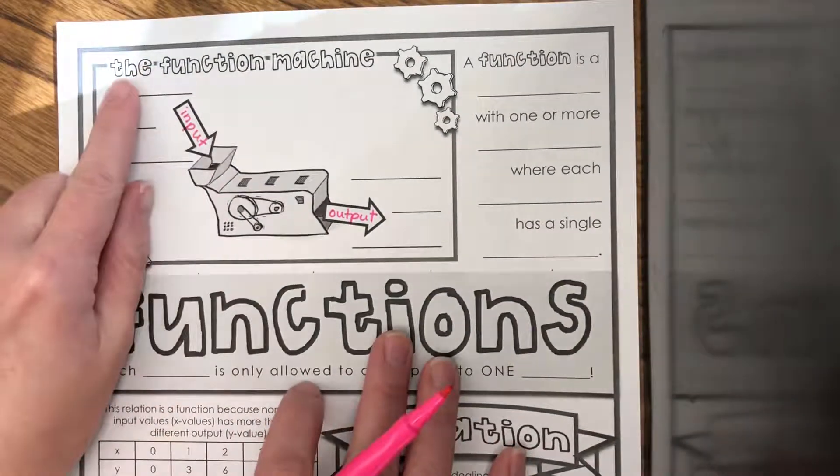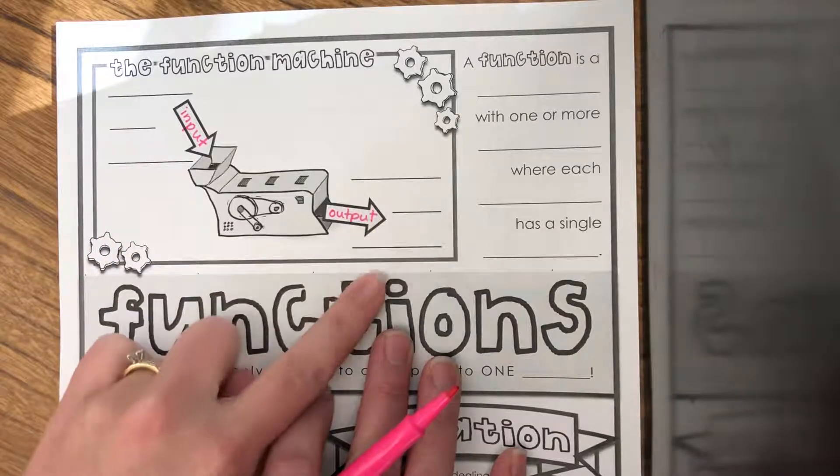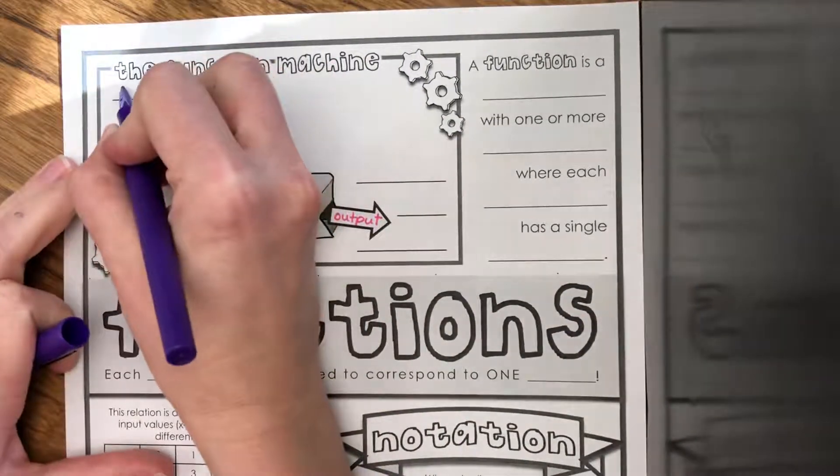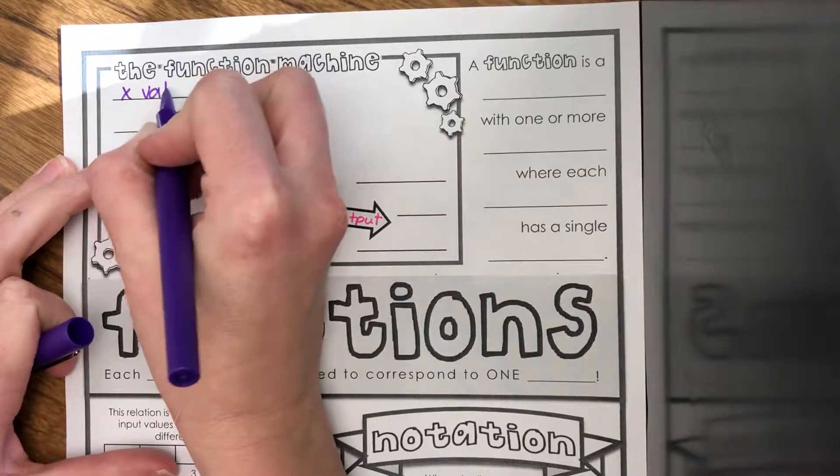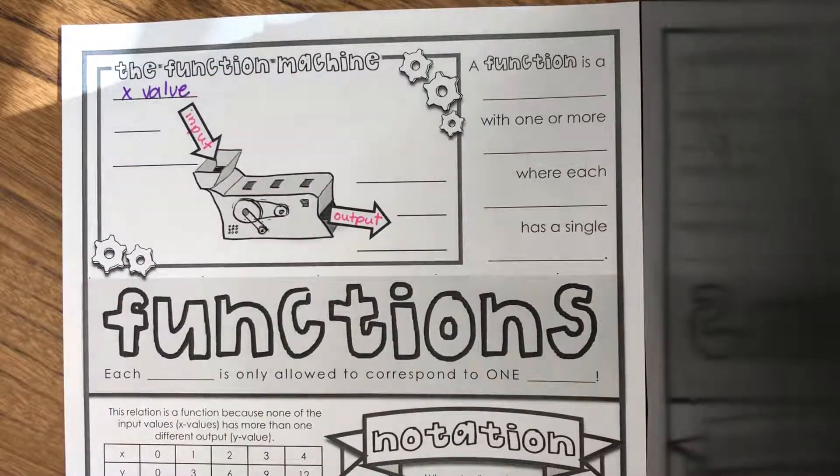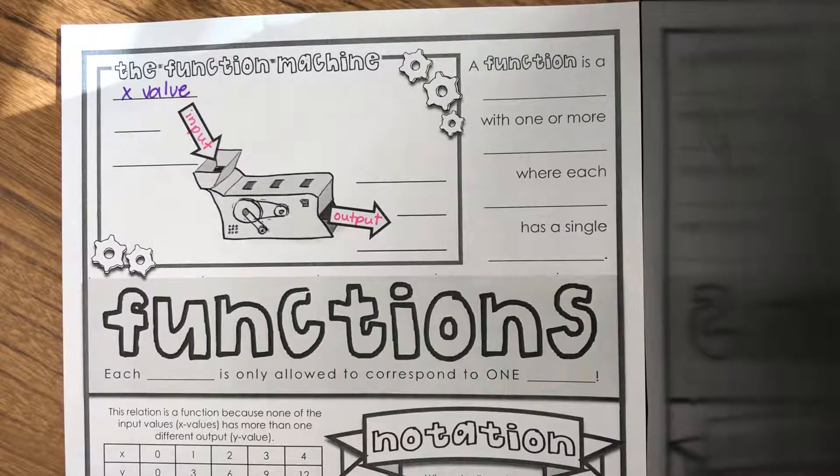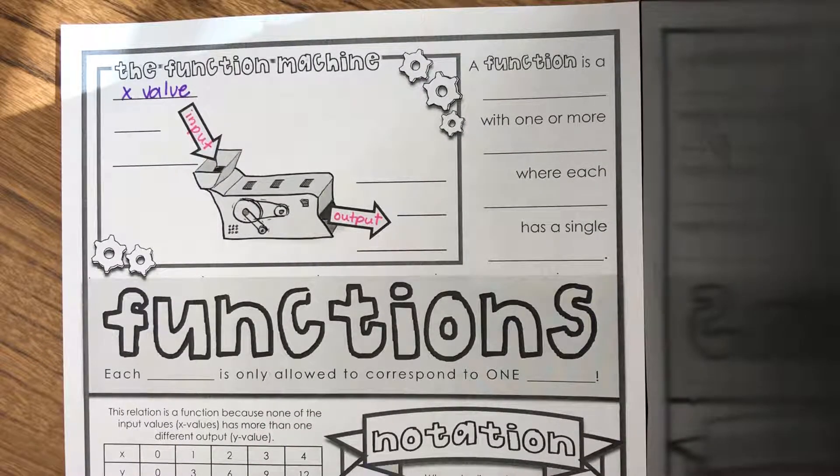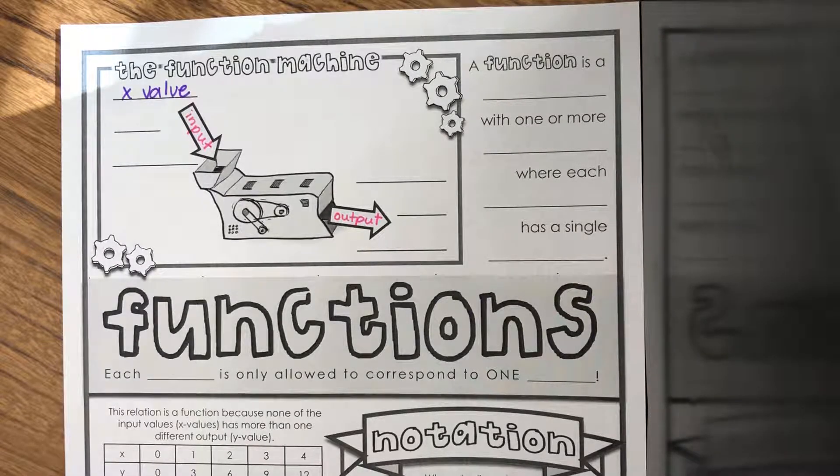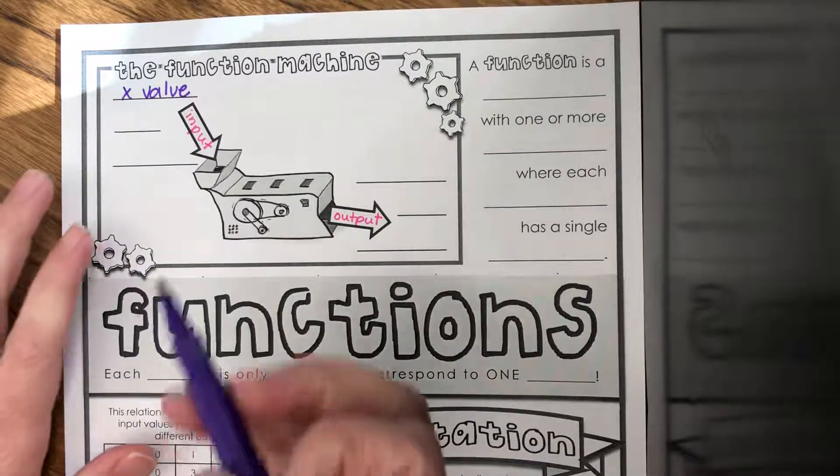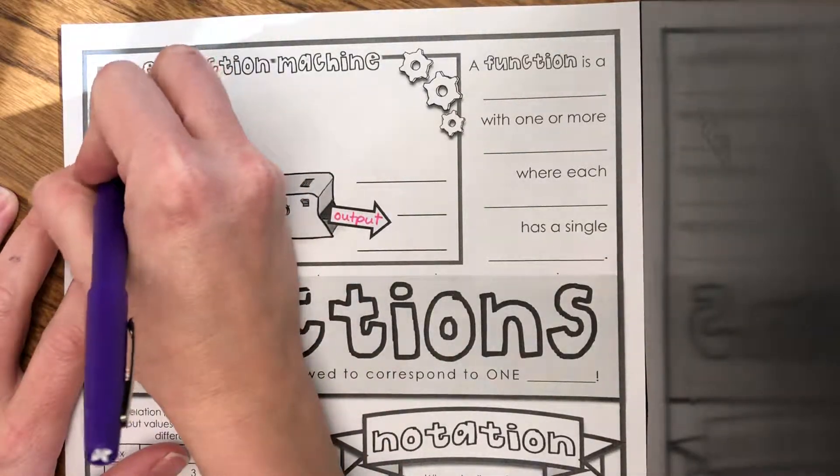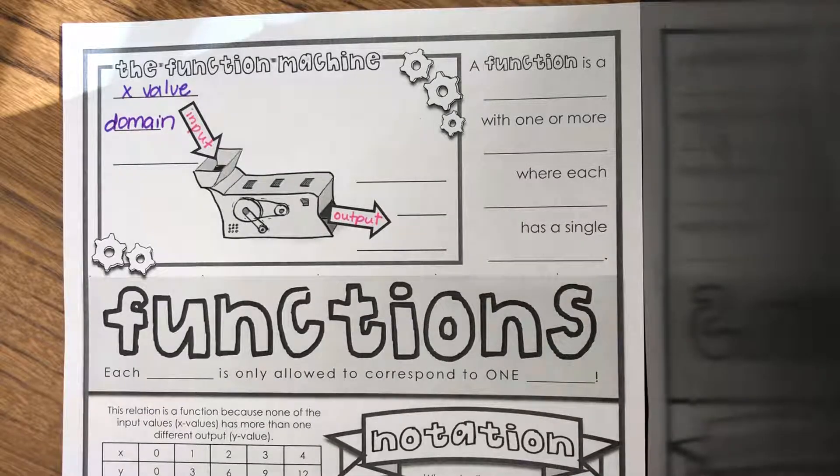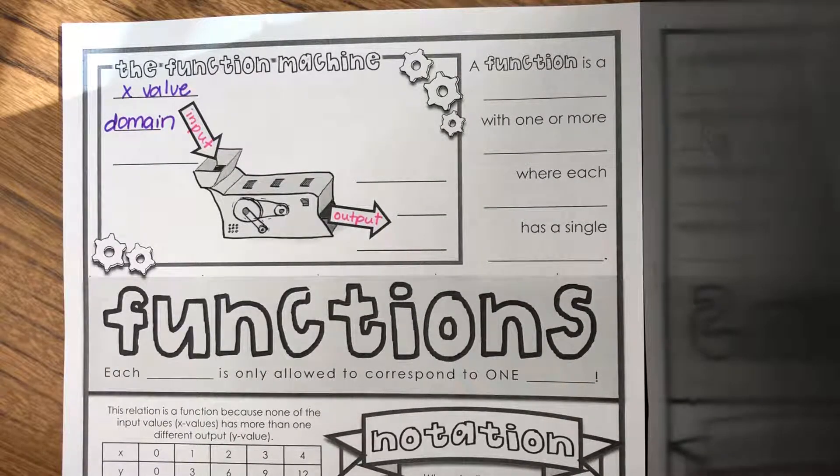Let's go back up to our machines. There are three different names for input and three different names for output. Input we can call the X value. When we are looking at functions, most of the time they are given in an XY table or graph. Another name is called the domain, and the domain is the set of all inputs.